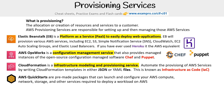You have Quick Starts. These are pre-made packages that can be launched and configure your AWS compute, network, storage, and other services required to deploy a workload on AWS. We do cover this in this course, but Quick Starts is basically just CloudFormation templates that are authored by the community or by the Amazon Partner Network.